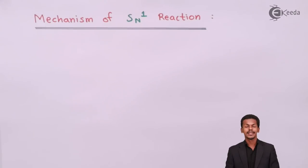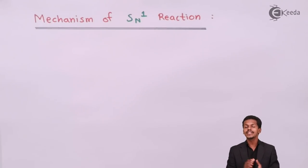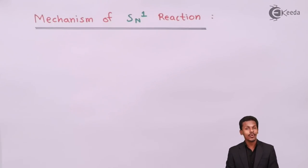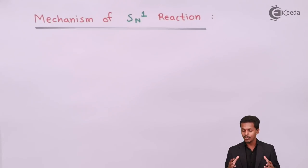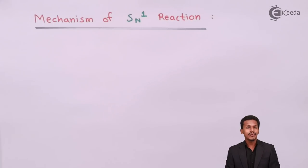The SN1 reaction is nothing but the unimolecular substitution reaction. As I said earlier, the rate of this kind of reaction depends on either the substrate or the nucleophile. Let me give a short example: we'll take the hydrolysis of tertiary butyl bromide, which exhibits the SN1 reaction.